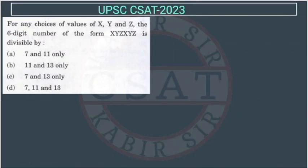Now, this question of 2023, for any choice of value of x, y, z, the six digit number of x, y, z, x, y, z is divisible by. So this is again the question of divisibility. What is the rule for divisibility? You have to just apply that.